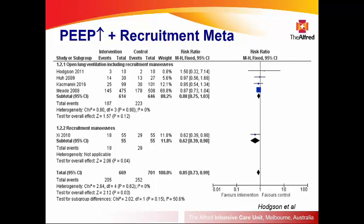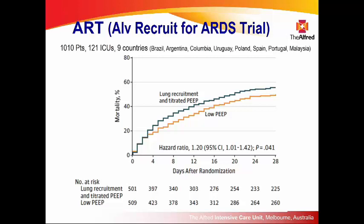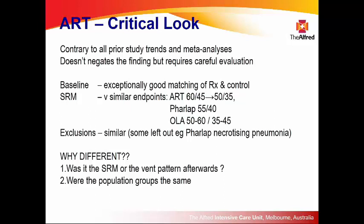Then ART came out just two weeks before we'd all finished our talks. Danny, sitting safely in Ireland, thought the debate was over — ART had shown that alveolar recruitment is dangerous and increases mortality. The ART trial randomised a thousand patients, with the treatment group receiving a recruitment maneuver very similar to ours versus a lower PEEP group.